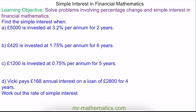We'll begin with question A, where we have £5,000 invested at 3.2% per annum — which means per year — for two years. We'll begin by working out 3.2%, which is our interest rate, of our principal amount of £5,000. This will give us the interest at the end of one year, and because it's simple interest, we double it to make it for two years.